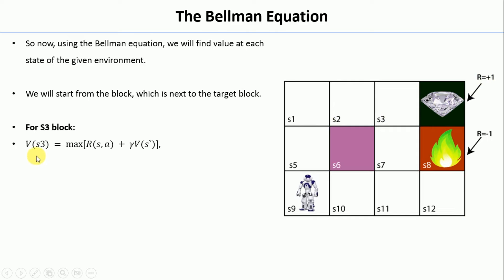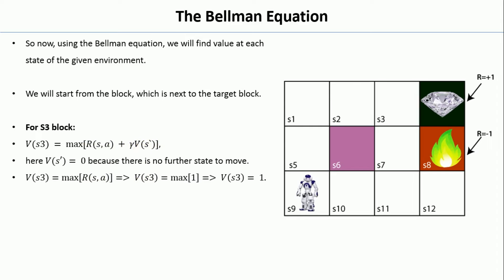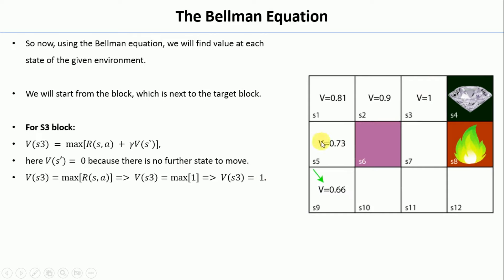The Bellman equation for S3 looks like this: V(S3) = max(R_SA + gamma * V(S')). In this case, R_SA equals 1 because you get a reward of 1 when moving right to the goal. Gamma equals 0.9, which is the discount factor. V(S') equals 0 because this is the first transition performed. So V(S3) becomes 1. I will put that value in S3.